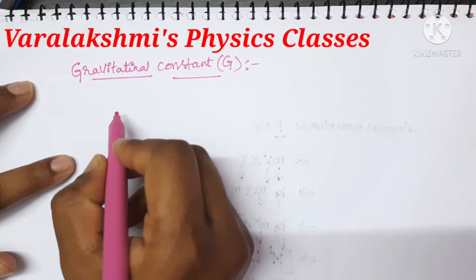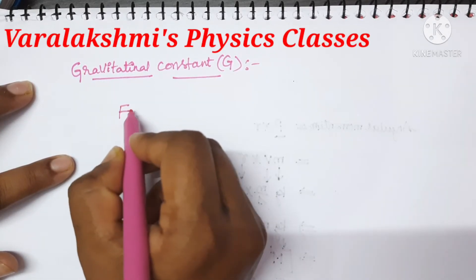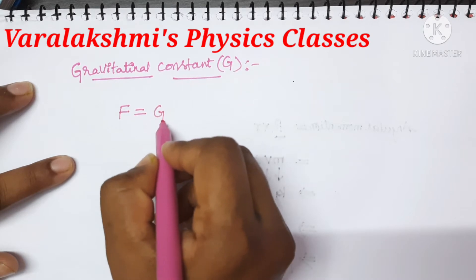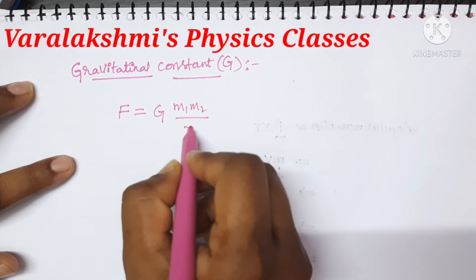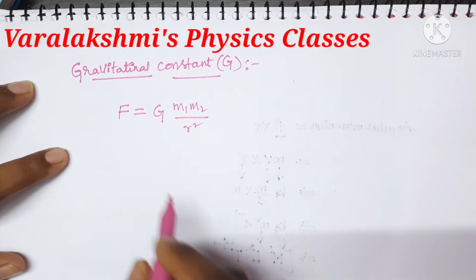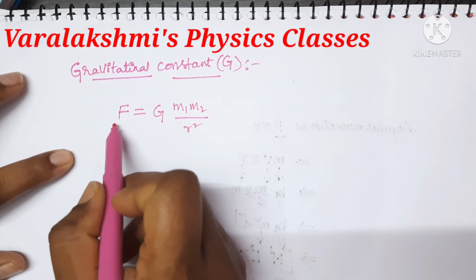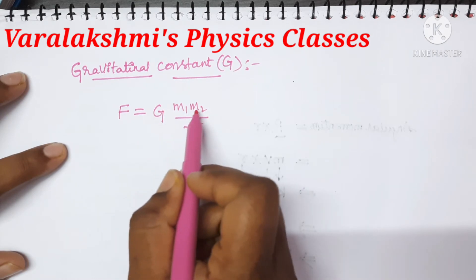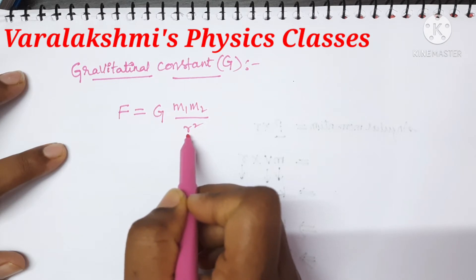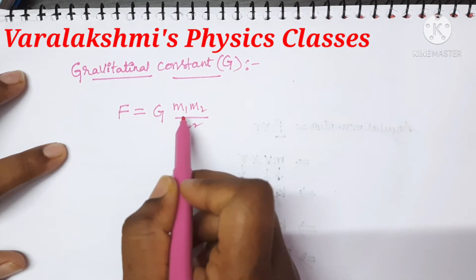The formula for the gravitational force is F equals G times M1 M2 divided by R square. Here F is the gravitational force, G is the gravitational constant, M1 M2 are the masses of the two bodies or particles, and R is the distance between the two bodies.